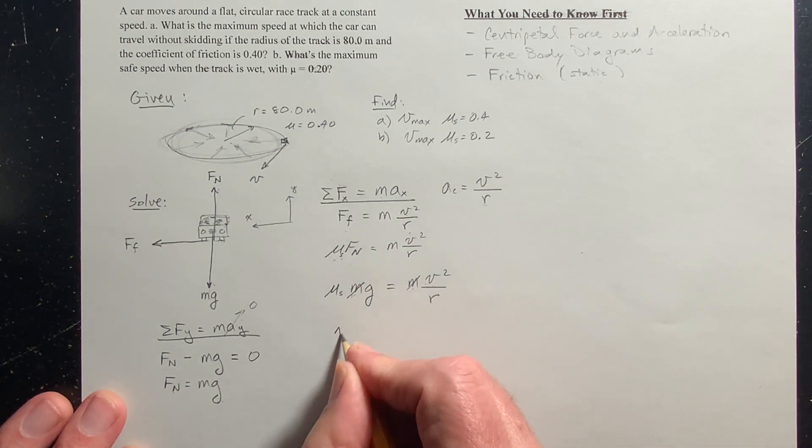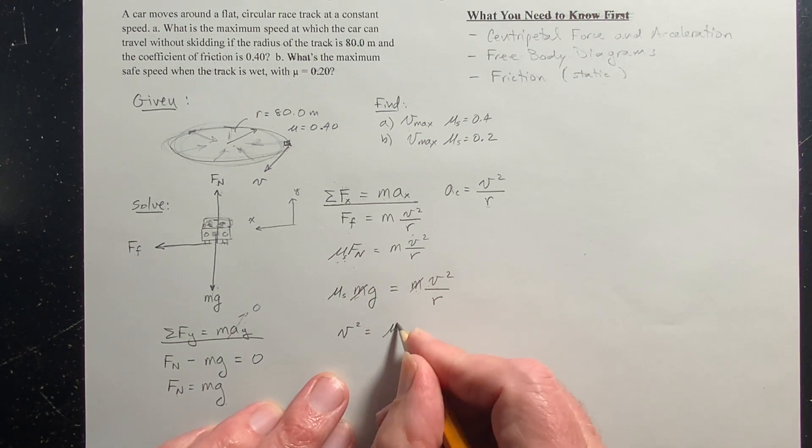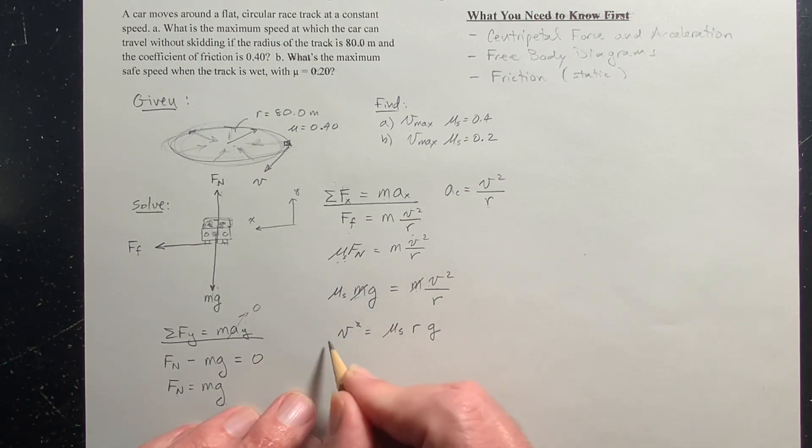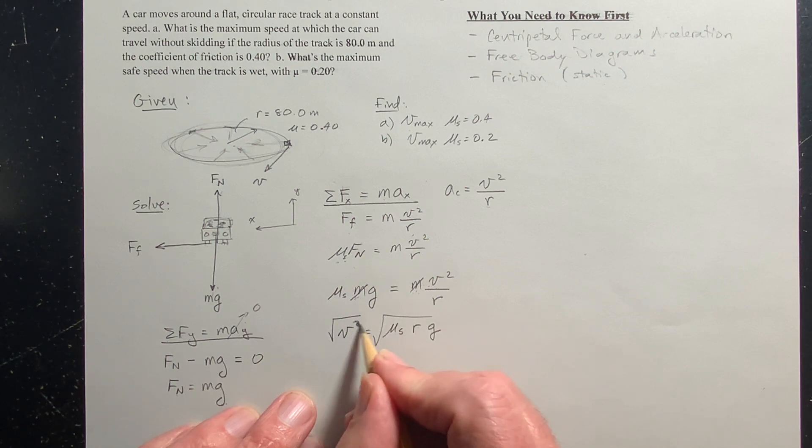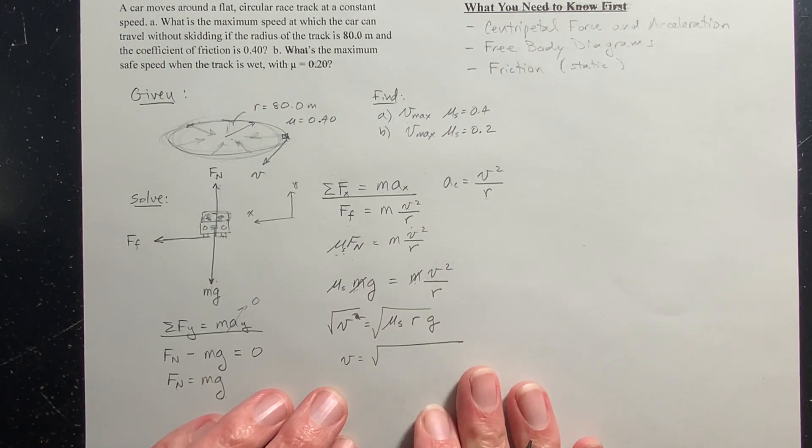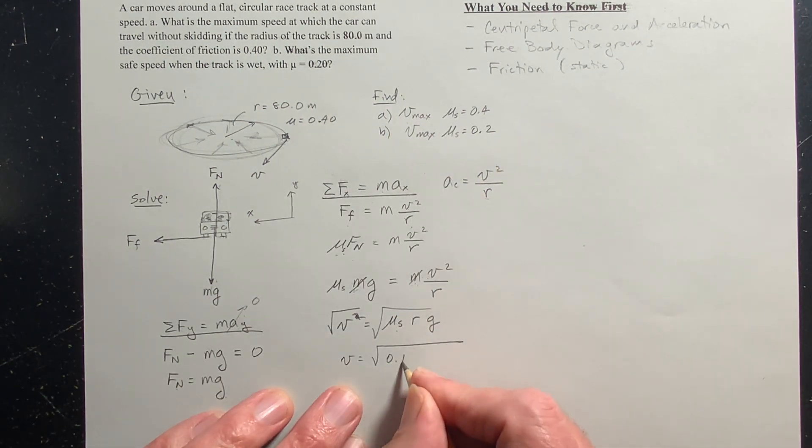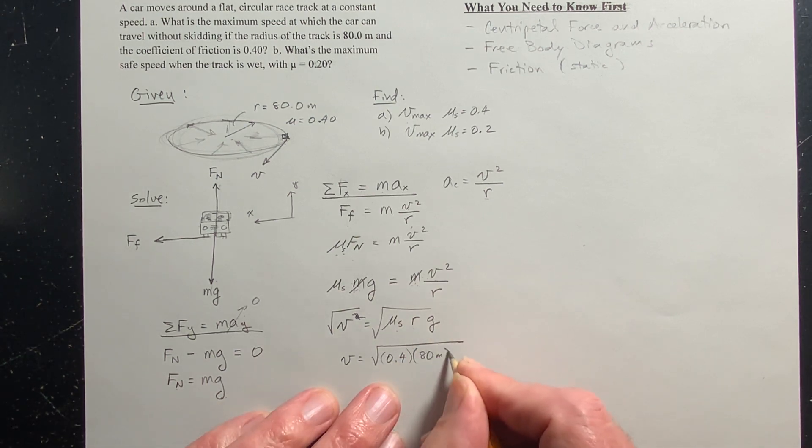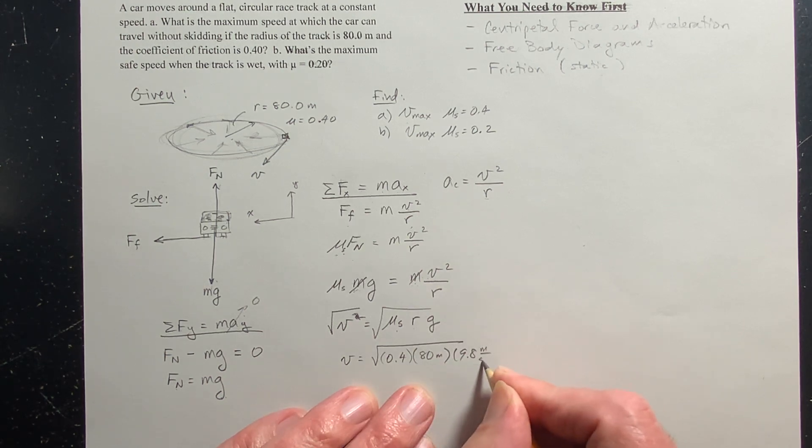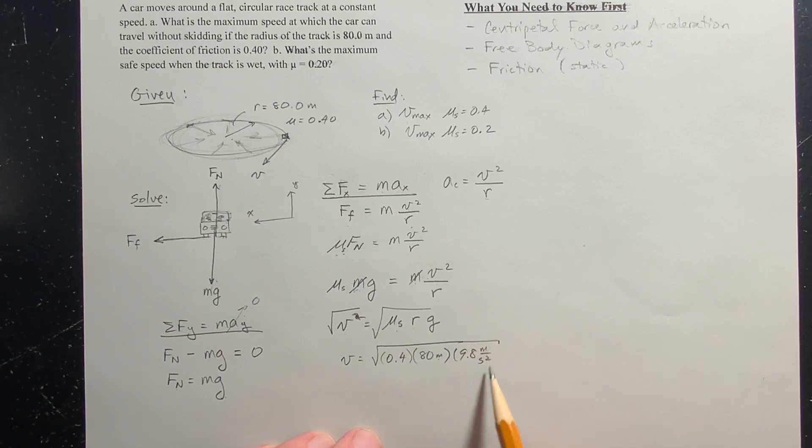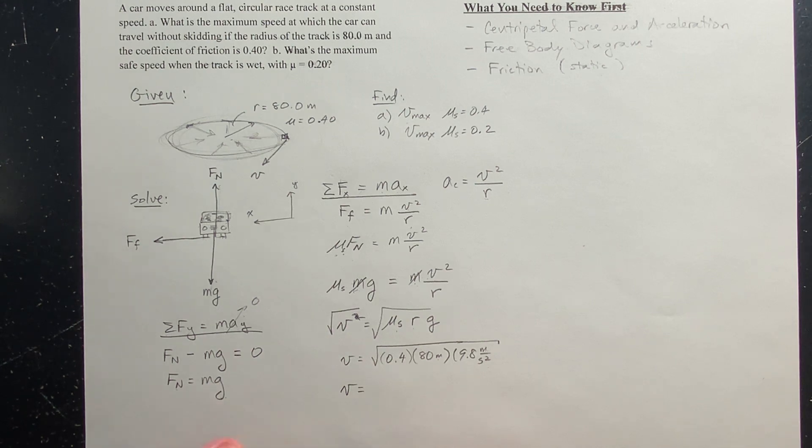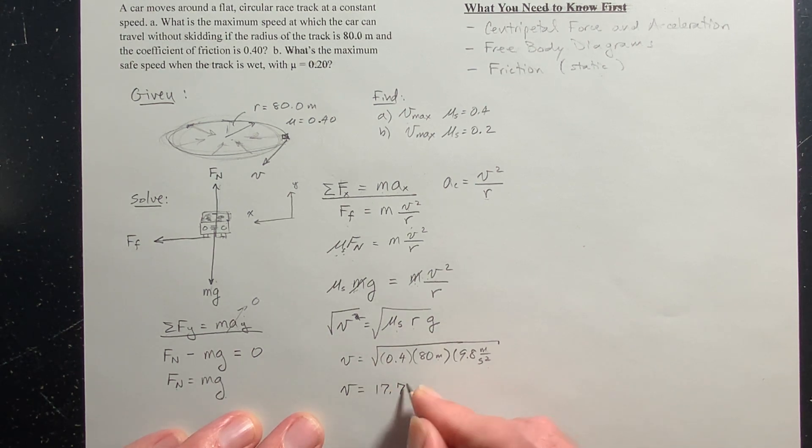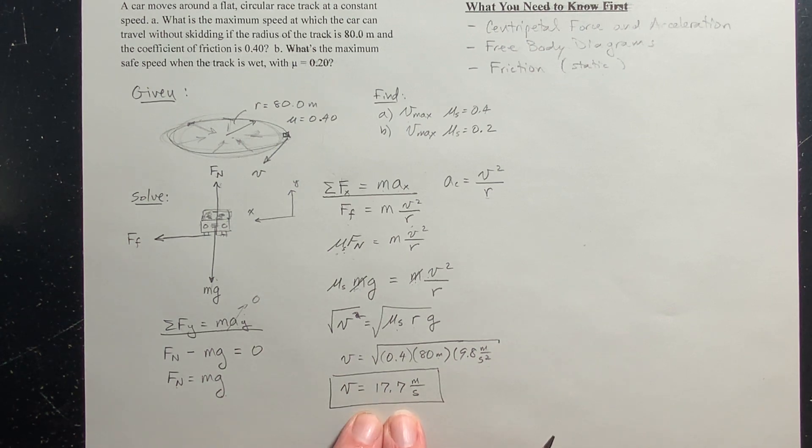Now we can solve for v. So v squared is equal to mu static, just multiply by r times g. We'll take the square root of both sides. And then we get v equals the square root of, well, mu s for part a is 0.4. We'll assume three significant figures for everything. This is 80 meters. And g is 9.8 meters per second squared. Let's check the units. We've got meters times meters. That's meters squared per second squared. Square root that you get meters per second. So that's good. The units work. And when you plug all this in your calculator, you get 17.7 meters per second.